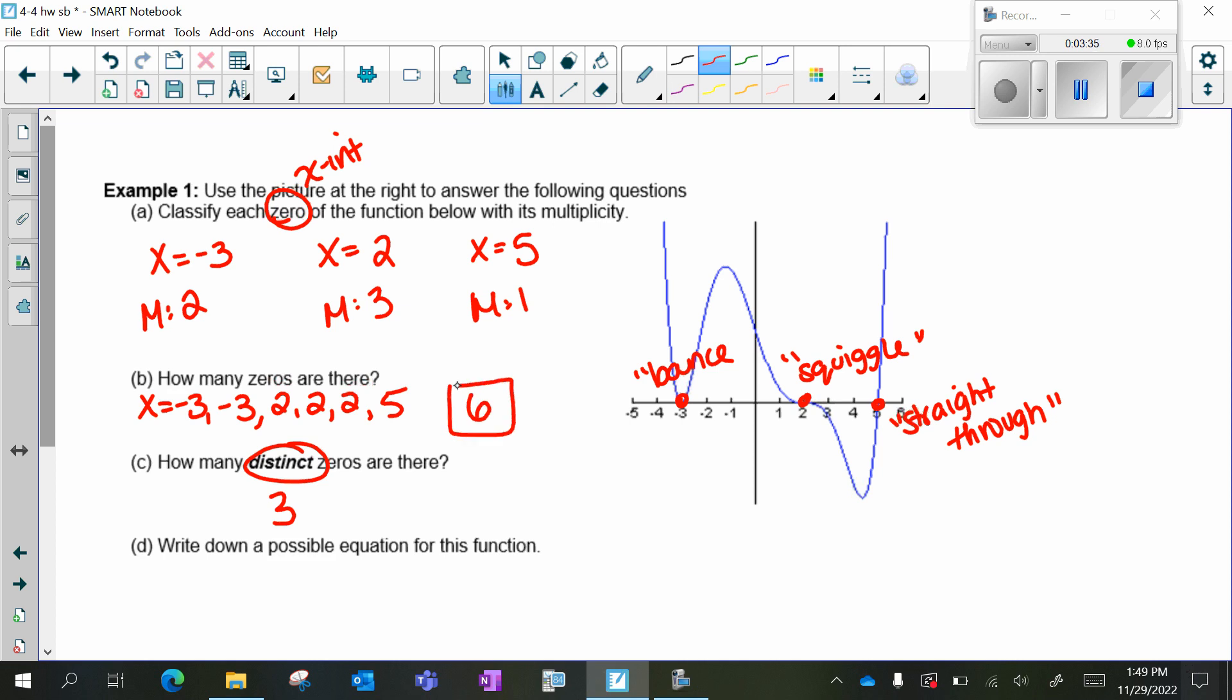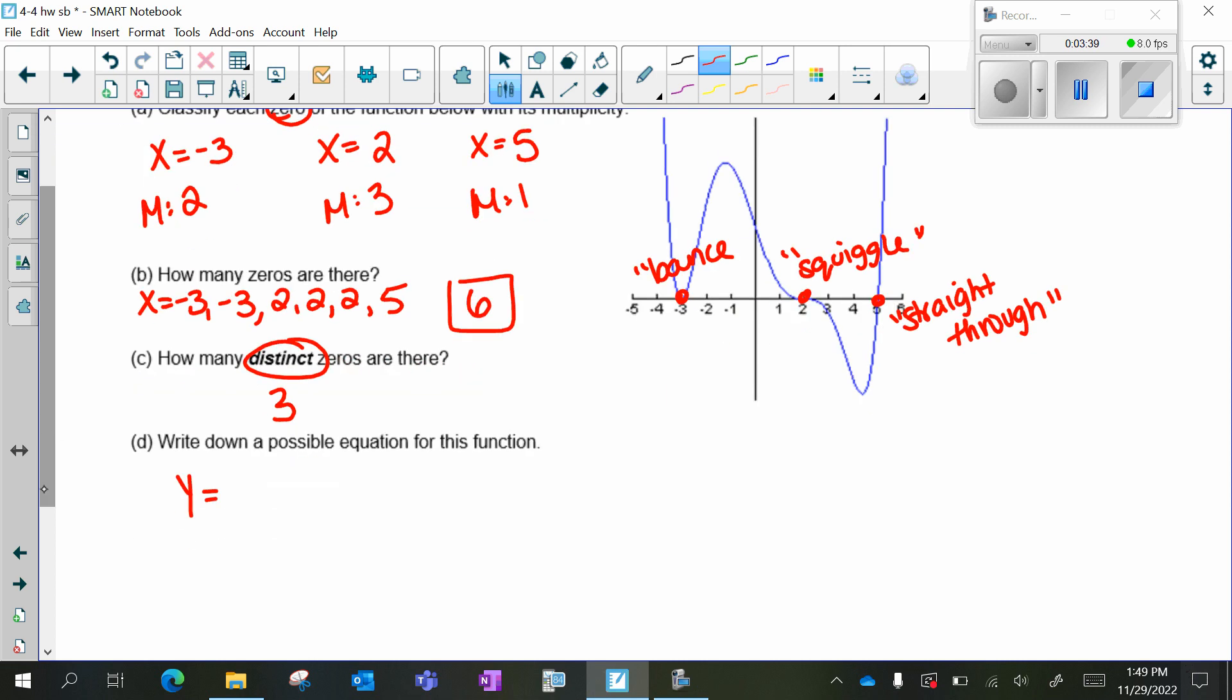Our possible equation: we always have to have a y = or an f(x) =. Your zeros turn into factors. If it's x = 3, its factor is the opposite: x + 3. Remember that inside parentheses is always opposite. That has a multiplicity of two, so there's my exponent of two.